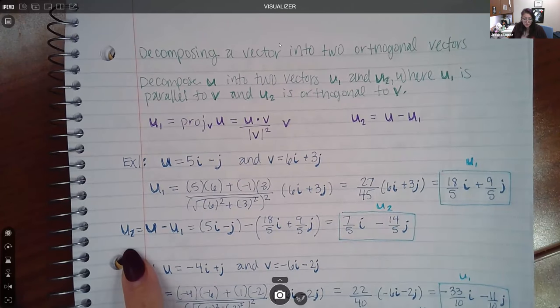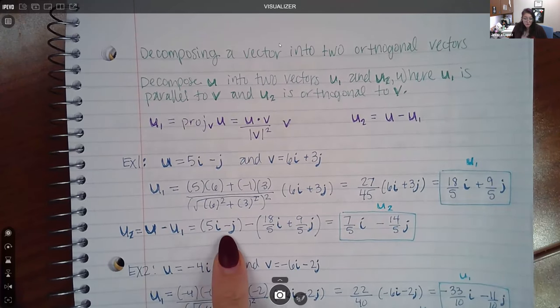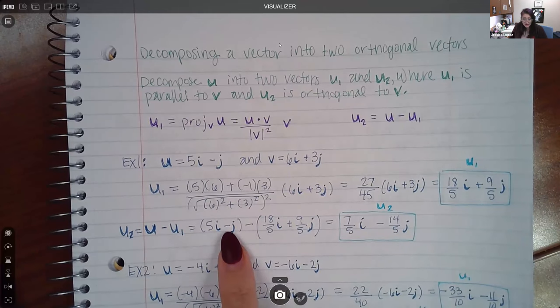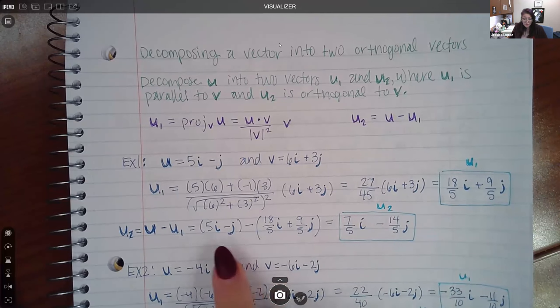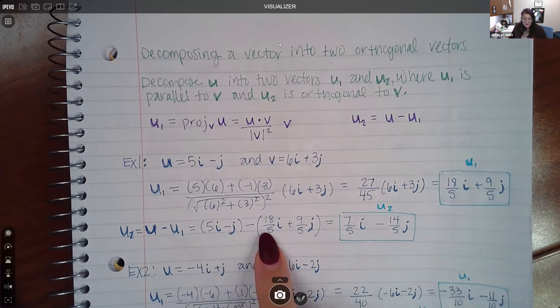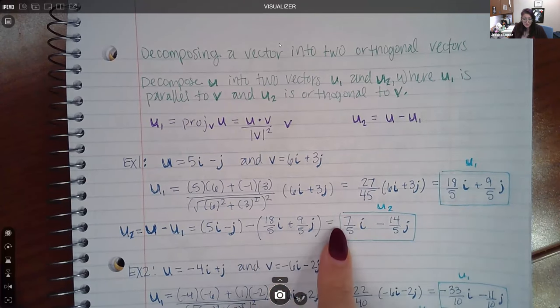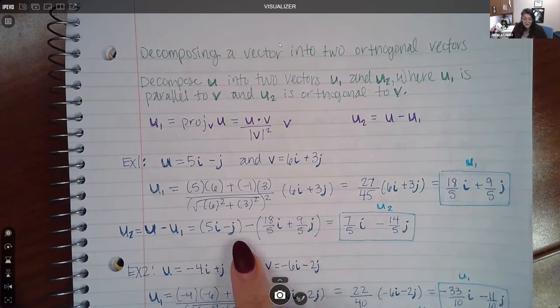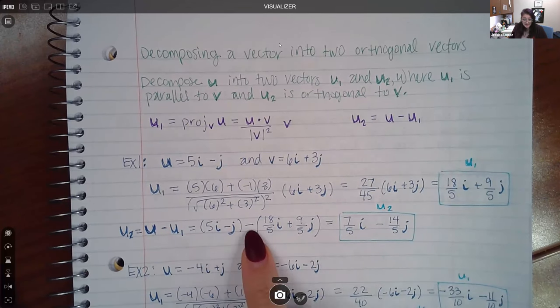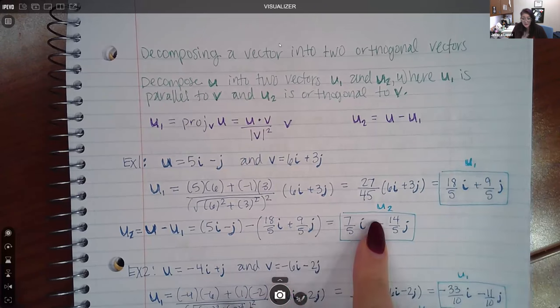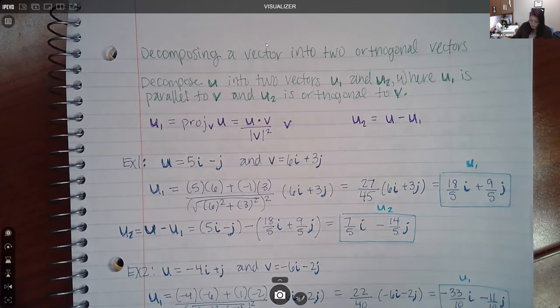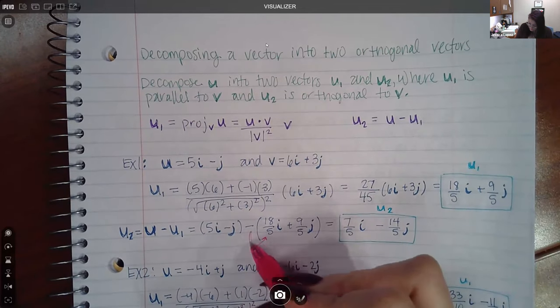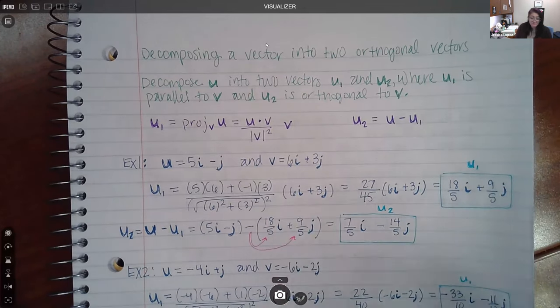Now, if you want to find U2, you're going to take the original U, which was 5i minus j, and subtract the U1 that you just found. So 5 subtract 18 over 5 is where I got 7 over 5. And then negative 1 minus 9 fifths is where I got negative 14 fifths. So you do have to distribute this negative before you combine the i's and the j's.